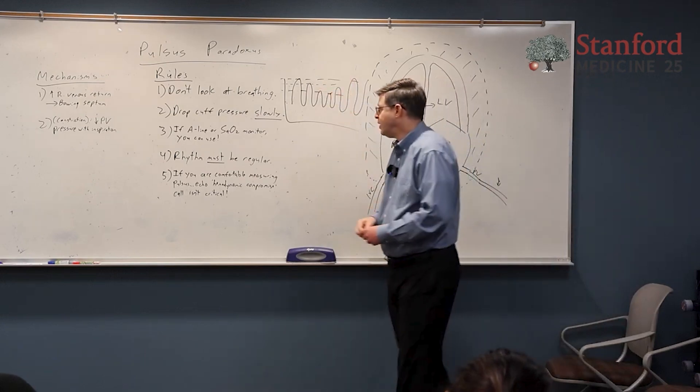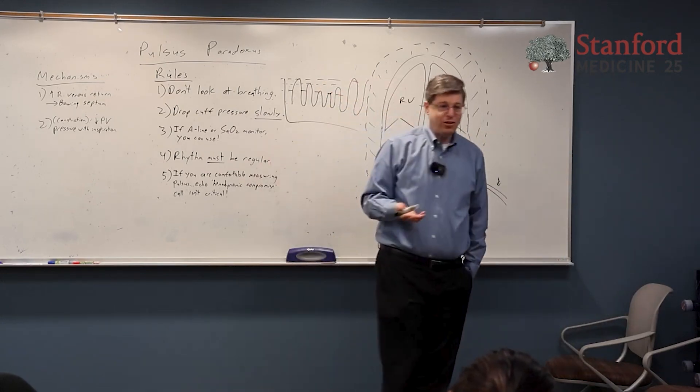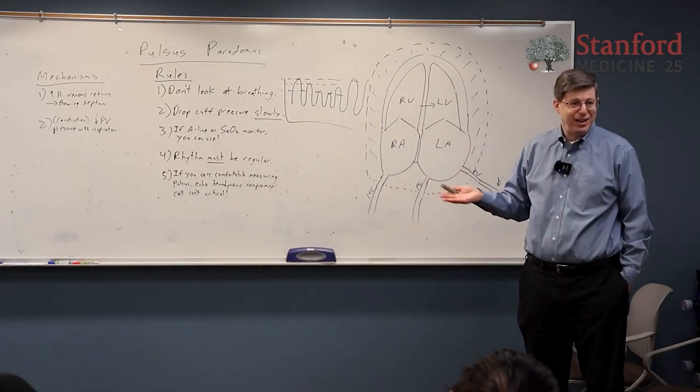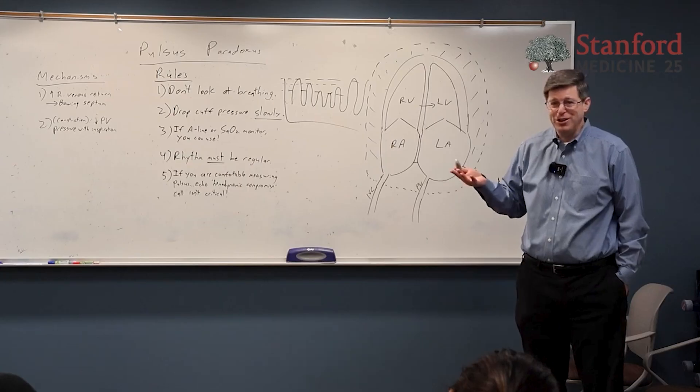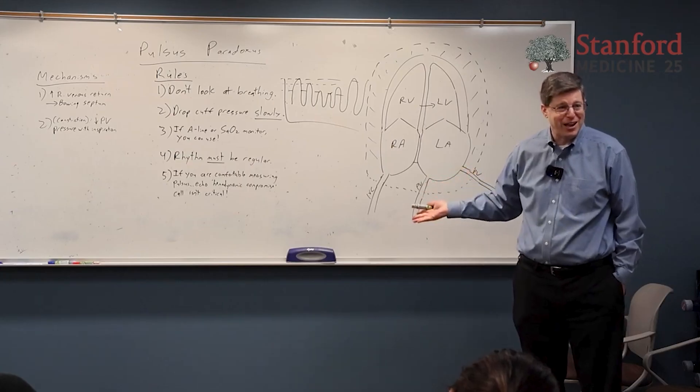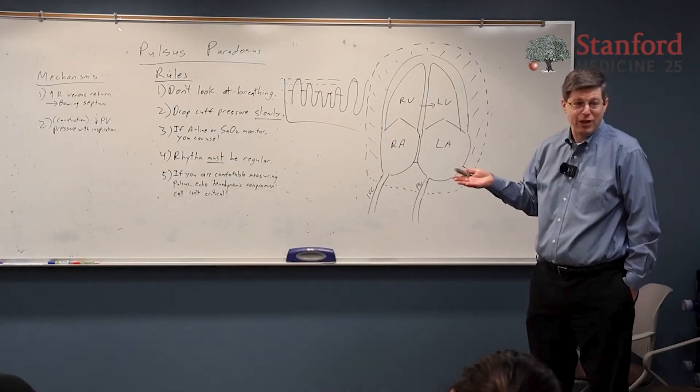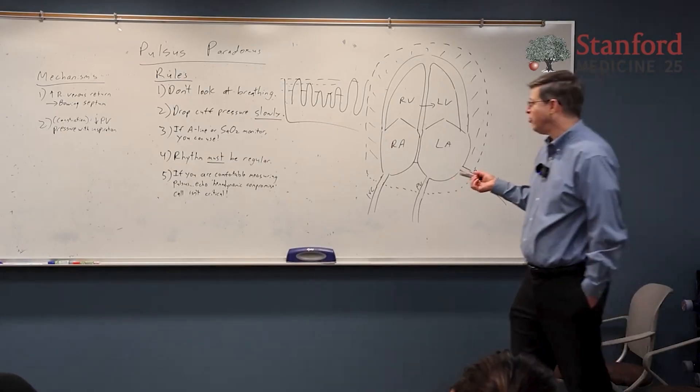Number three, if a person happens to have an A-line in, you know they're in the ICU with an A-line - now I hate to say it because this is a physical exam session, but you don't really need to do it if they have an A-line in. You can just look at the A-line and you'll see a pulsus on people with an A-line not that infrequently if they have the right situation for it. So then use it.